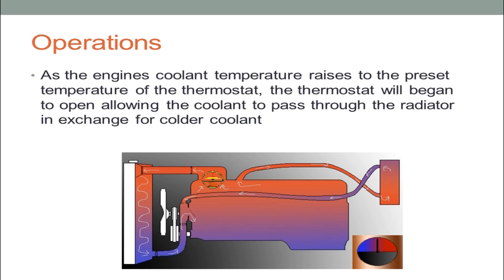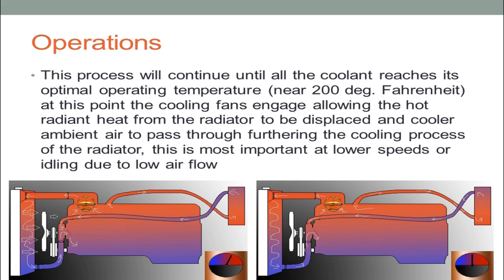As the engine coolant temperature rises to the preset temperature of the thermostat, the thermostat will begin to open, allowing coolant to pass through the radiator in exchange for colder coolant. This process will continue until all coolant reaches its optimal operating temperature near 200 degrees Fahrenheit. At this point, the coolant fans engage, allowing hot radiant heat from the radiator to be displaced and cooler ambient air to pass through — this is most important at lower speeds or idling due to low airflow.